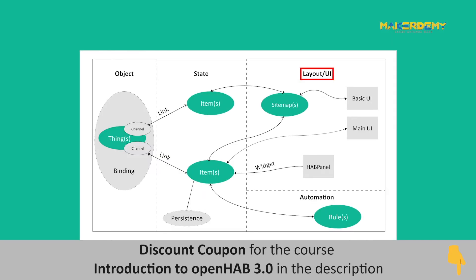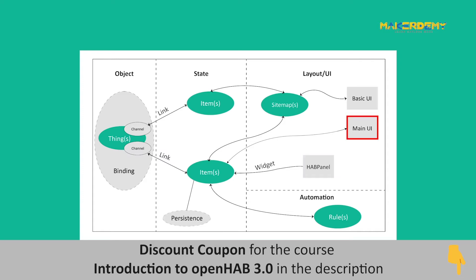We have now come to the user end of OpenHAB, which deals with the different user interfaces for various purposes. As shown here, OpenHAB 3.0 supports three UIs: the Main UI, Basic UI, and the HAB Panel.